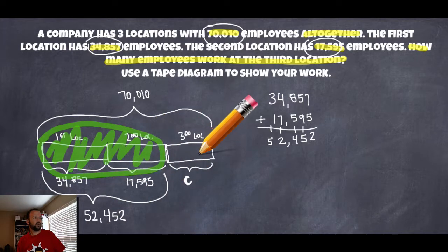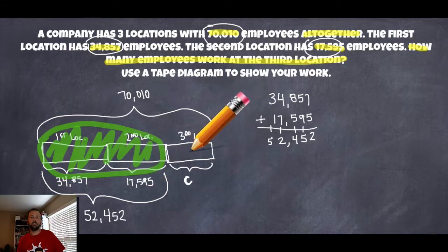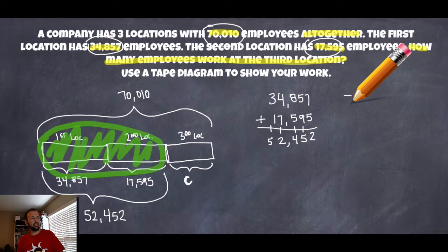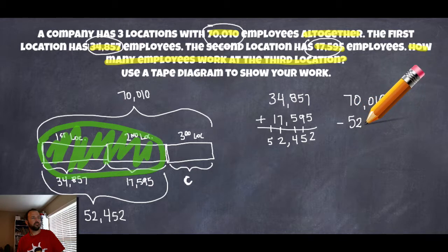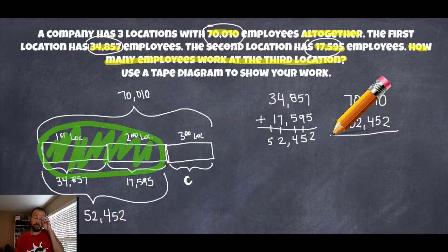That gives me a good start, but I still have to find C. If I take my total number of employees and subtract the number of employees at the first two locations, what's left should be C — what's at location number three. So I'm going to take my 70,010 and subtract 52,452 from that. I want you to try this out on your own first. We're subtracting across some zeros, so we're going to have to do some unbundling.